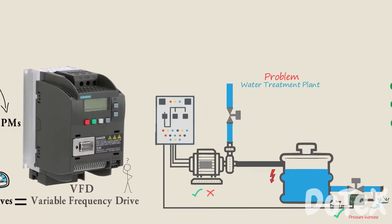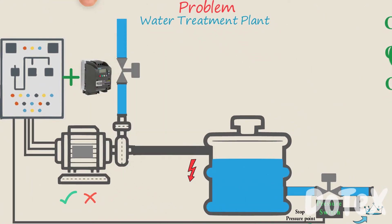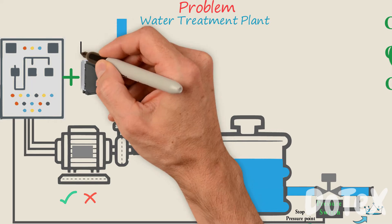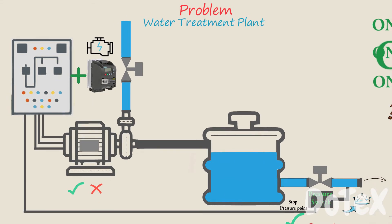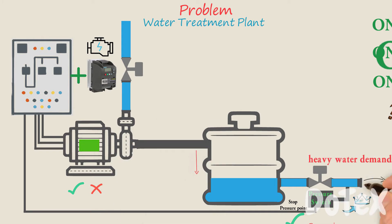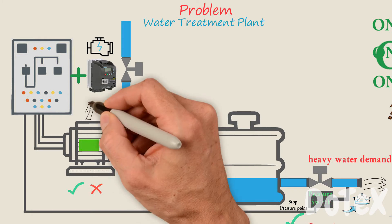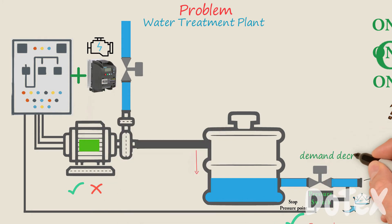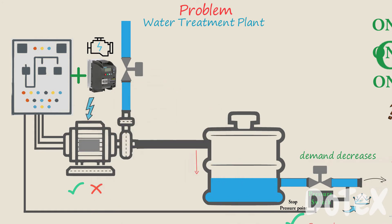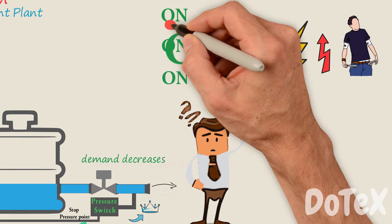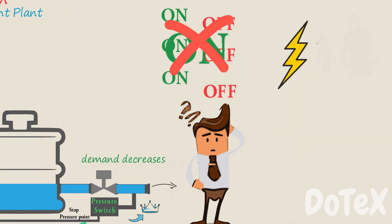Let's go back to our problem. The VFD system will change the speed of the pump in order to keep a constant pressure. When water is used, the drop in pressure turns on the pump. If there is heavy water demand, the pump speed will be higher. As the demand decreases, pump speed will slow or stop. So as you can see, the pump will not start and stop as many times with the VFD system, and this will decrease power loss and save energy and money.